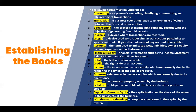3. Bookkeeping — the process of maintaining company records with the objective of generating financial reports. 4. Journals — a device where transactions are recorded. 5. Ledger — a device used to sort out similar transactions pertaining to specific accounts; it gives the balances of any account at any date. 6. Accounts — the term used to indicate assets, liabilities, owner's equity, income, expenses, and withdrawals. 7. Financial reports — financial information such as the income statement, balance sheet, and cash flow statement.